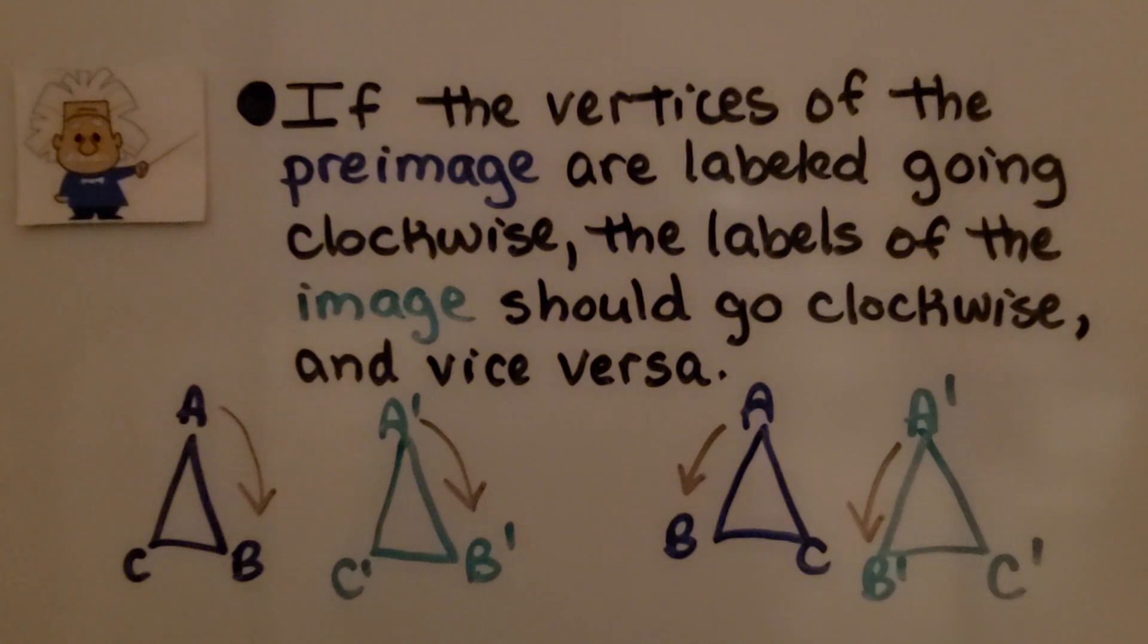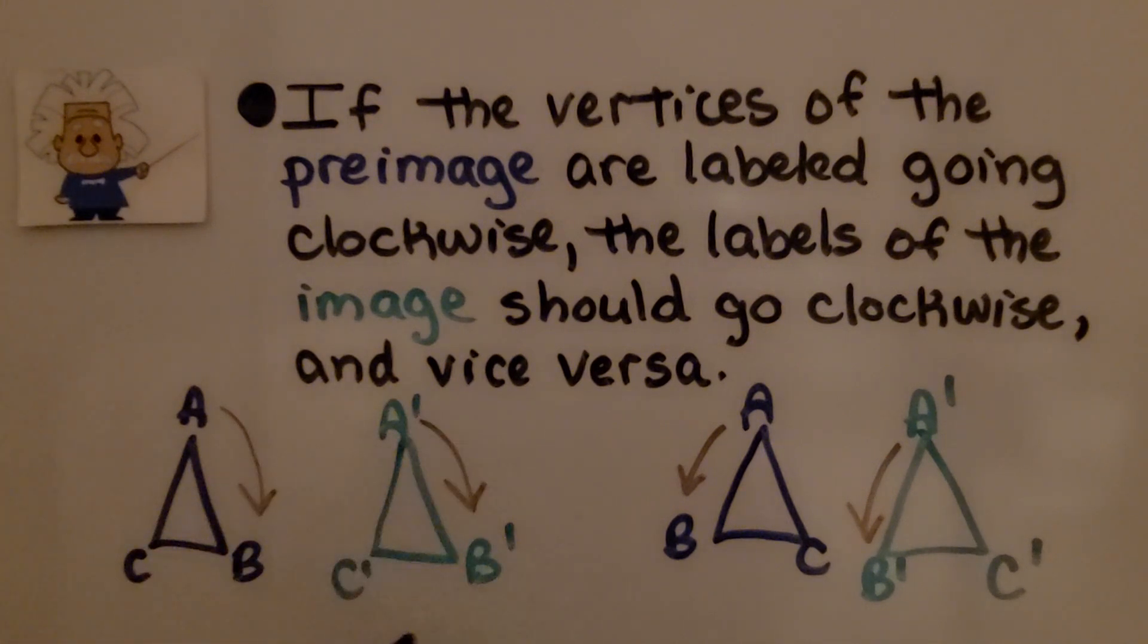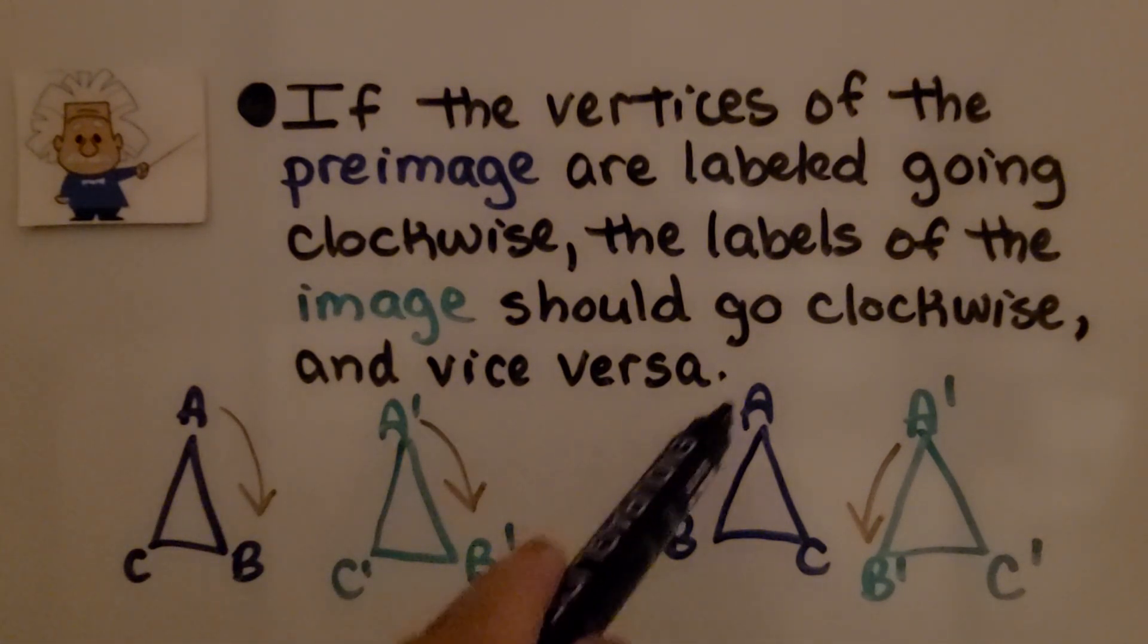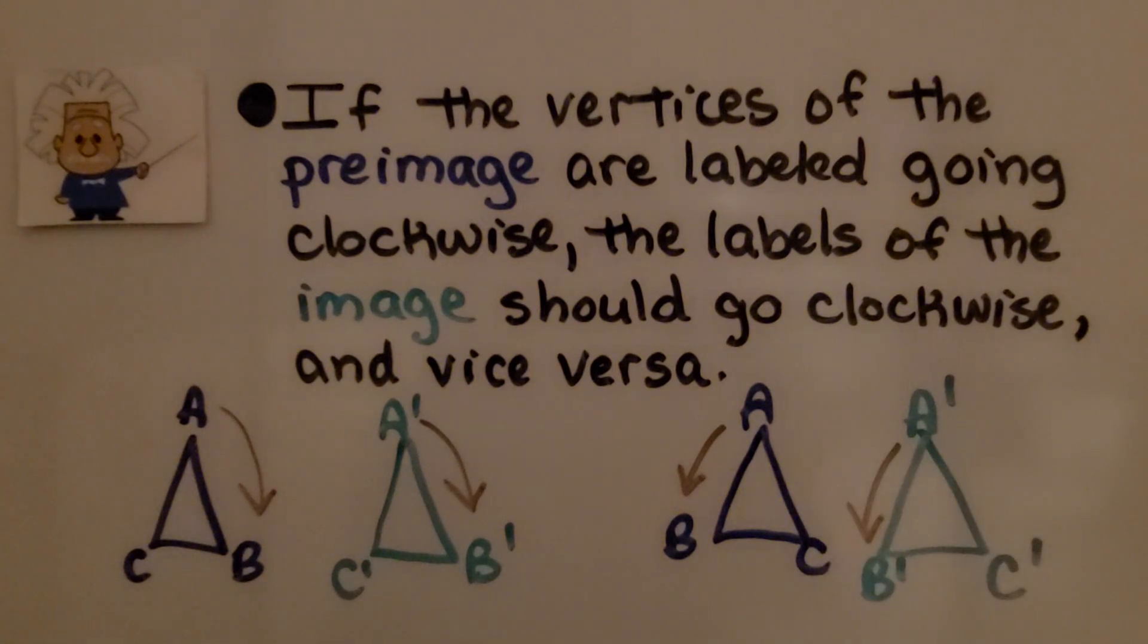If the vertices of the preimage are labeled going clockwise, then the labels of the image should go clockwise and vice versa. If they're going counterclockwise, then the image should be labeled going counterclockwise.